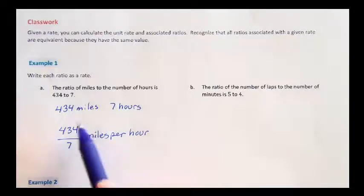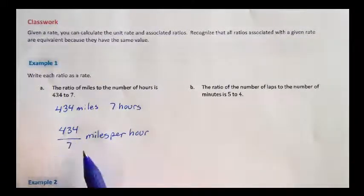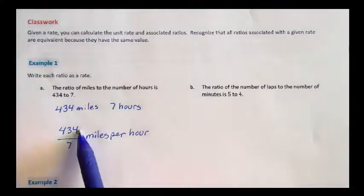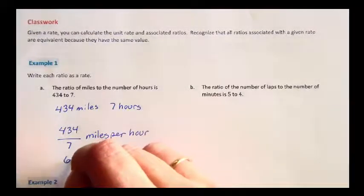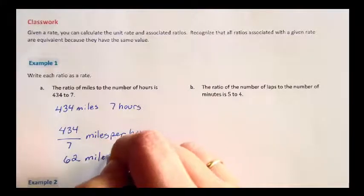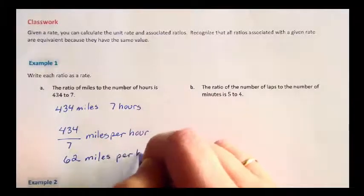If we want a unit rate, we actually do the division. 434 divided by 7 is 62 miles per hour.